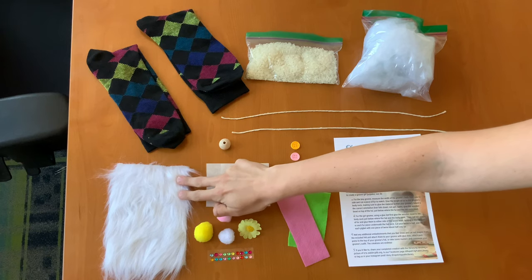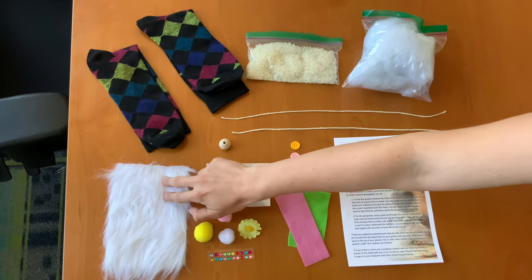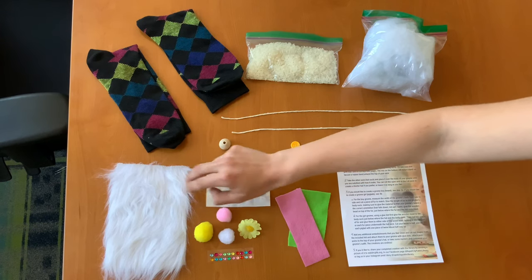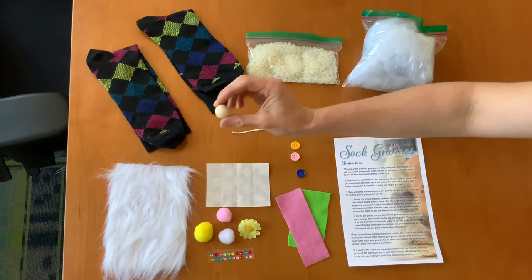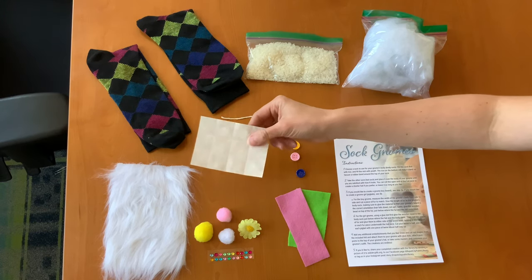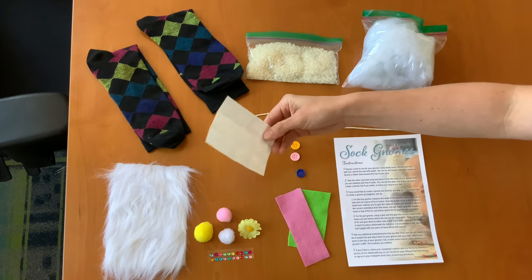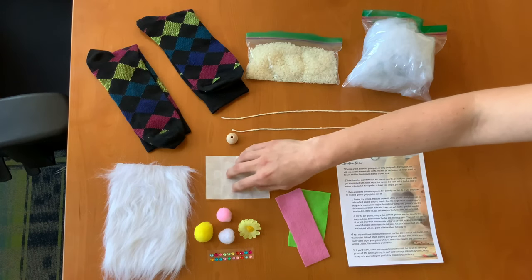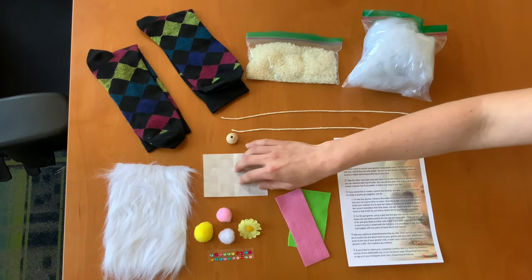Some craft fur for either your gnome's beard or its pigtails, depending on whether you make a boy gnome or a girl gnome, a wooden bead for your gnome's nose, a sheet of glue dots. These are permanent glue dots and they will stick anything to anything so we don't need any additional glue.